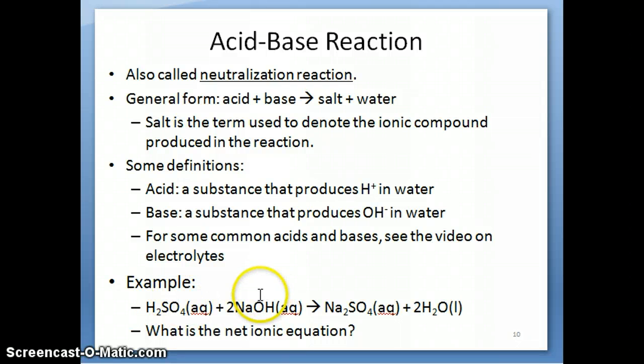It's a double replacement reaction. So, what happens is then you take this ion, and you swap it with that ion, the cations. So, you take this, and when you partner the sodium with the sulfate, you get sodium sulfate. That's what we call the salt. It's just an ionic compound. You notice the other product is H and OH combined together, and that's just water.